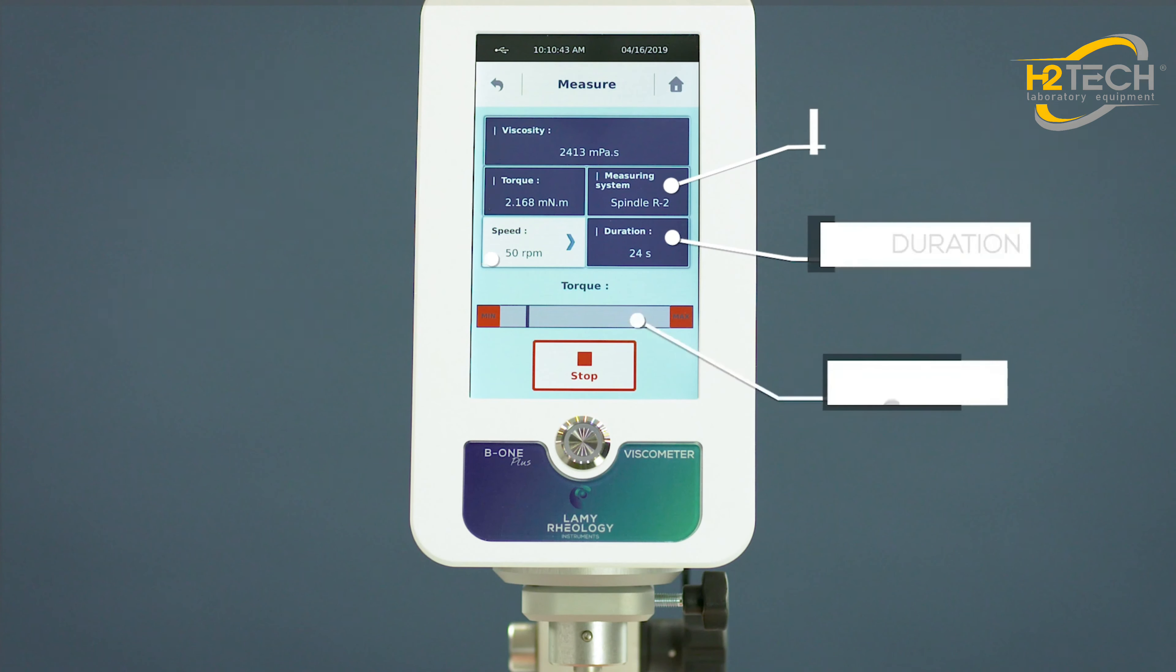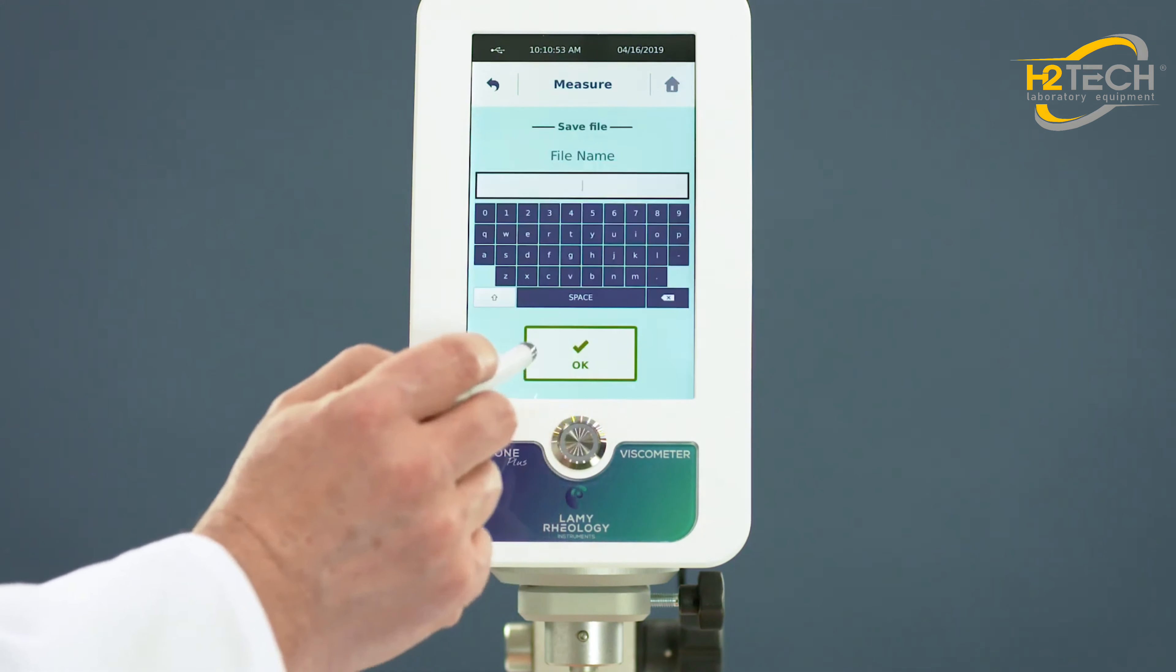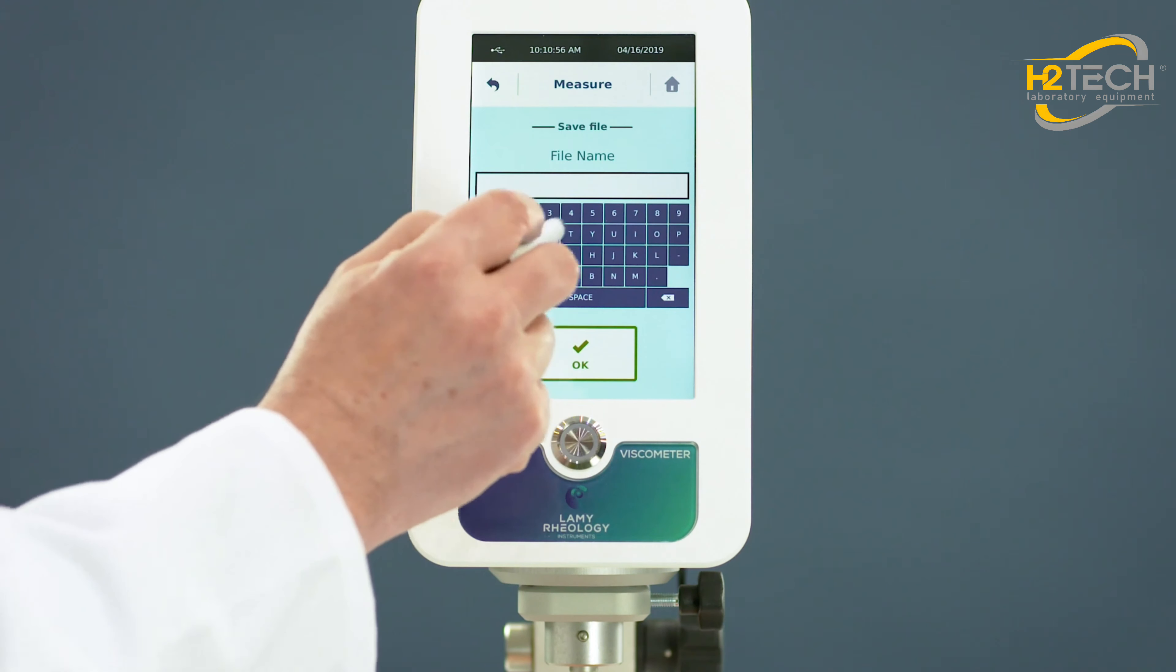A gauge allows you to see if the torque is not too close to lowest or highest limit of the device. After the test, you can save all data in the device's memory to be read or exported later.